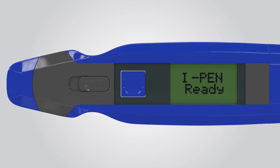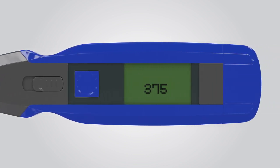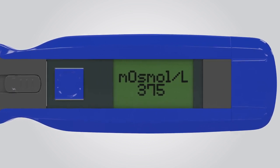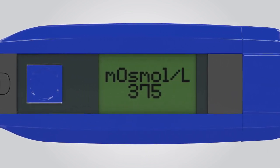The readings typically range from 275 to 375 milliosmoles per liter. These readings help eye care professionals diagnose and target treatment for ocular surface disorders that affect tear electrolyte concentrations.